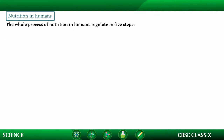Now let's see the process of nutrition in humans. The whole process of nutrition in humans is regulated in 5 steps: Ingestion, Digestion, Absorption,